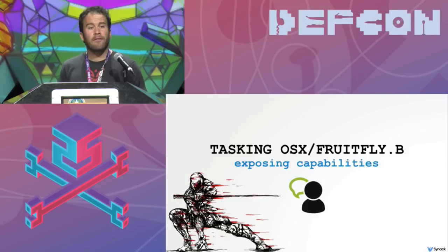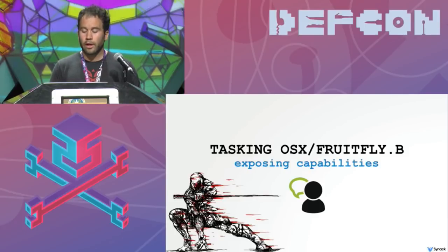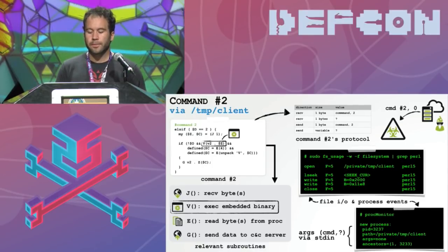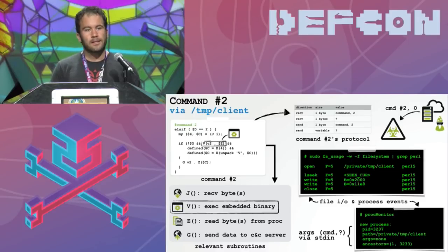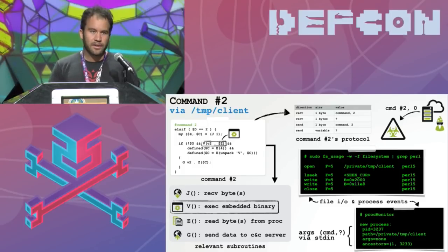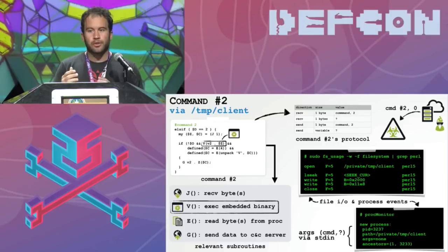Now we task. We have our monitoring capabilities and the custom command and control server. The first command is command number two. Looking at the malicious Perl script, this command via the J subroutine expects an additional byte from the C2 server, then invokes the V subroutine to execute the embedded Mach-O binary, and then invokes the G subroutine to send the response back. We know it requires an additional byte and will send back variable length data. So we send the malware command number two with zero for the second byte, and via the file monitor we can see it dropping the embedded Mach-O binary, and via the process monitor we can see it executing that binary as well.